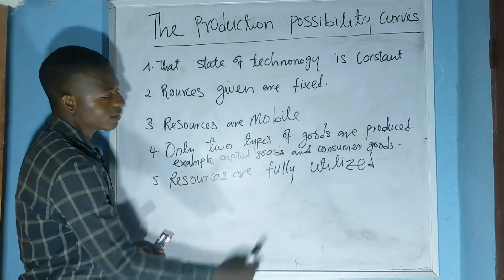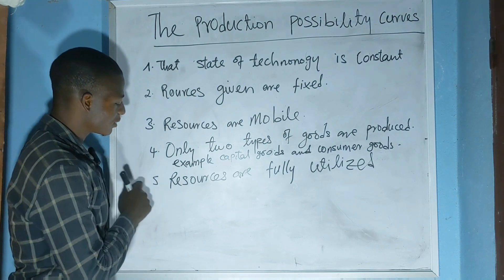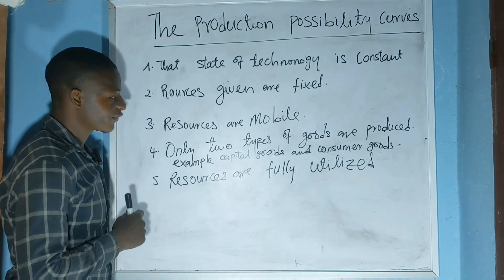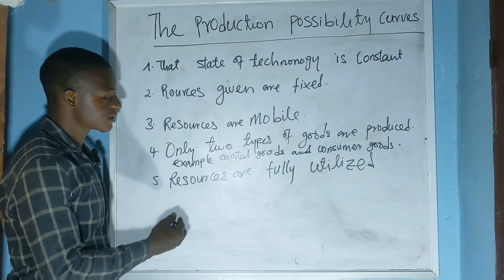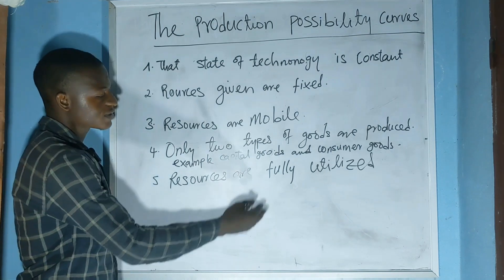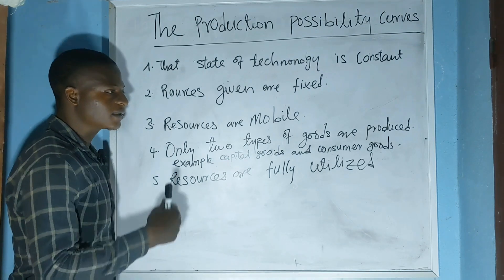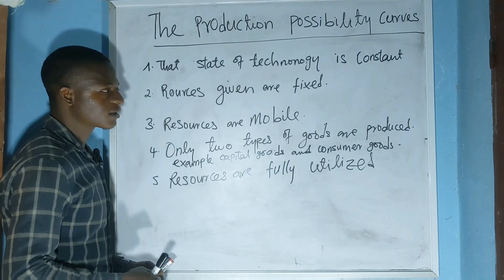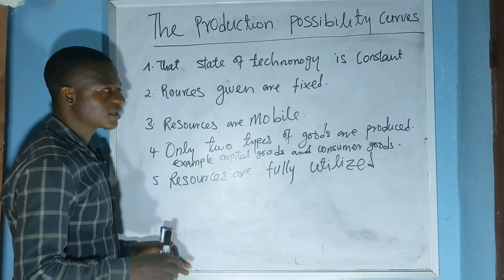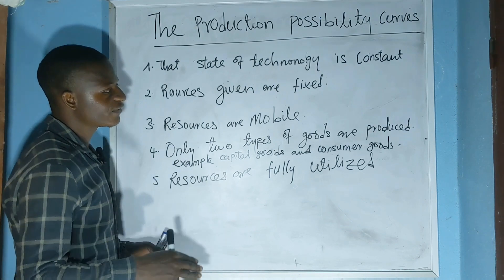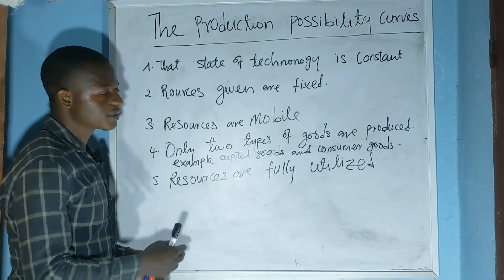The fifth and last assumption is that resources given are fully utilized — meaning there is no idle capacity, and all resources are fully used up in the production process.